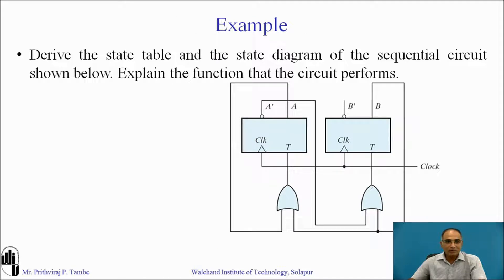Let us understand this with the help of an example. We will derive the state table and state diagram for the sequential circuit shown. At the end we will discuss the function of this circuit. Looking at this diagram, we have two T flip-flops and two external OR gates. Both T flip-flops use the same clock, so this is an example of a synchronous sequential circuit in which both flip-flops change their outputs at the same time.